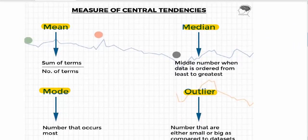First is what is the measure of central tendency? Measure of central tendency includes three things: mean, median, and mode.